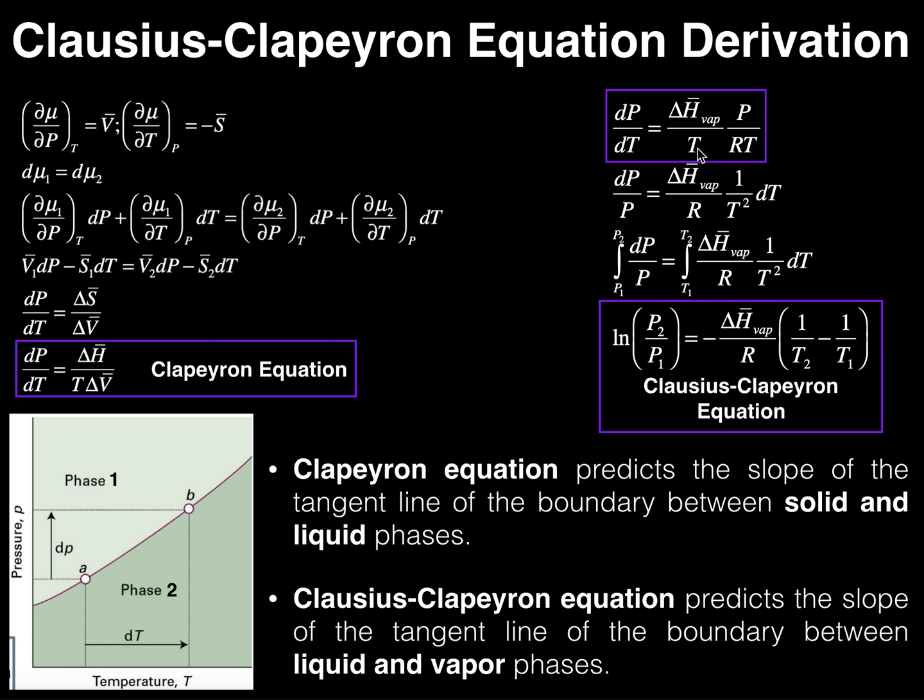And then if we substitute out that change in molar volume, since it's in the denominator here, we'll actually end up with pressure of the gas in the numerator divided by RT.